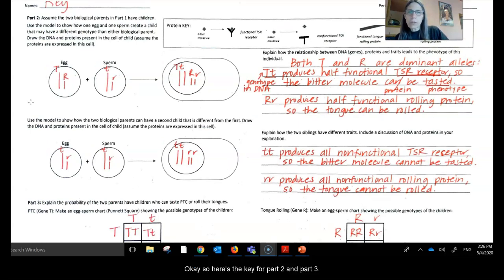Okay, so here's the key for part two and part three. What we see happening is here is a gamete from mom, a gamete from dad, and when they fuse together in this initial cell of what's going to become a fetus, and then be born as baby, we notice that we have the dominant allele for tasting and a recessive allele for tasting. It's the same with tongue rolling. We have a heterozygous situation. So we can predict that the phenotype for this individual, because we know these are dominant alleles, this kid is going to turn out to be a taster with the ability to roll their tongue.